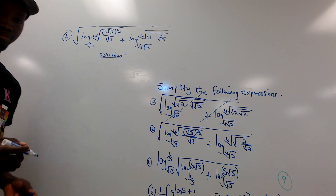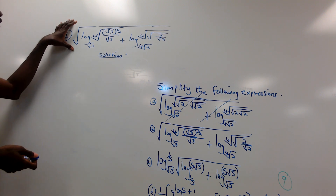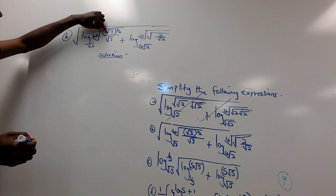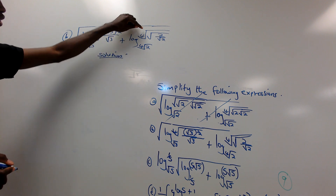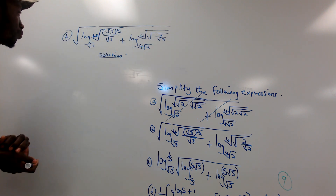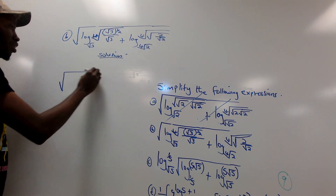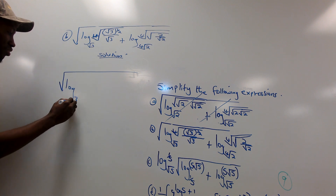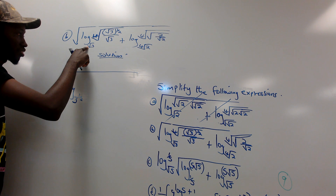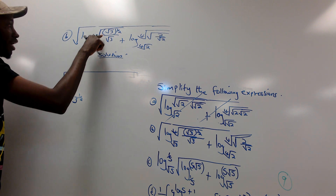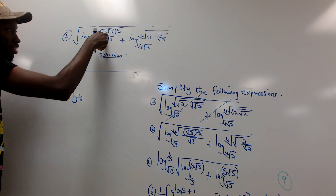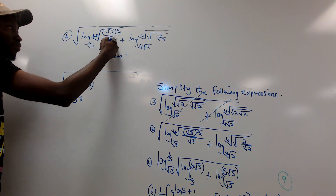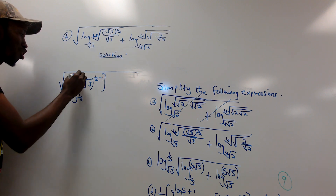For Problem B, we work through the first logarithm: root 3 in the argument is 3 raised to power 1/2. Root 3 raised to power 2 in the denominator: since bases are the same, we subtract powers — 1/2 minus 1 equals negative 1/2. All of this is raised to 1/4 from the fourth root. We also have a fourth root affecting the base.